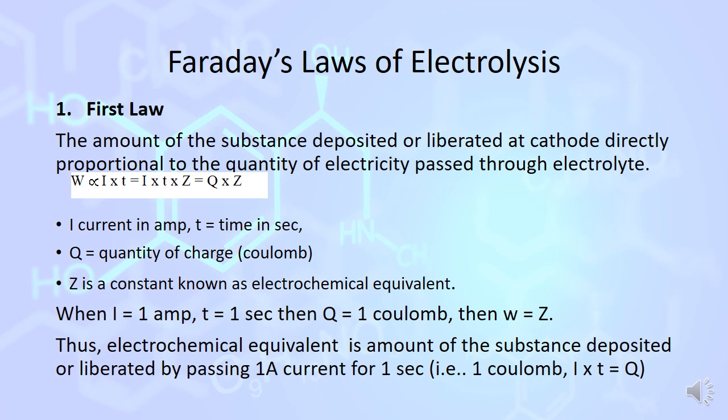Removing the proportionality, we can write W equals I T Z, where Z is the electrochemical equivalent, a constant. If we take 1 ampere current passed for 1 second only, then Q equals 1 coulomb. We can say W equals Z. This means electrochemical equivalent is the amount of the substance deposited when 1 ampere current is passed for 1 second.